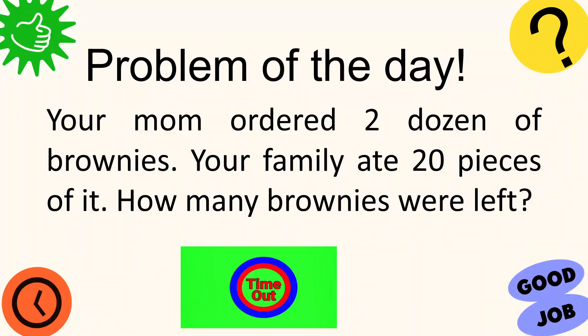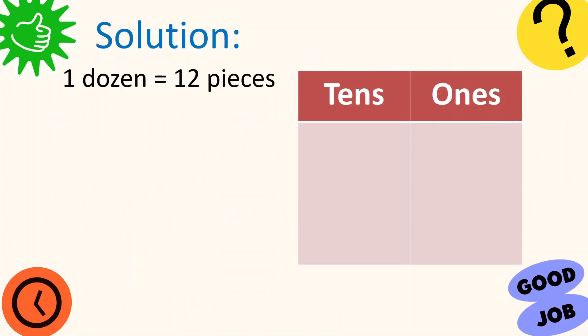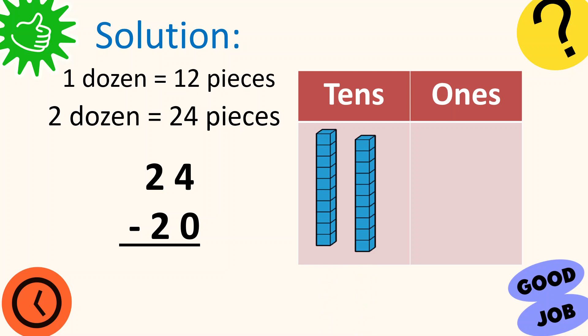Alright! Time is up! Now, for you to answer this problem, you need to know what does a dozen mean. When you say one dozen, that means it's equal to 12 pieces. And when you say two dozen, that means 24 pieces. Double the number. So let us now have our solution to the problem. We have 24 minus 20. Let's represent 24 using the place value chart and the base 10 blocks. So we have two tens and then four ones.